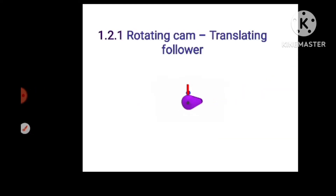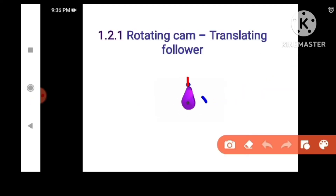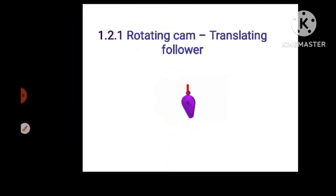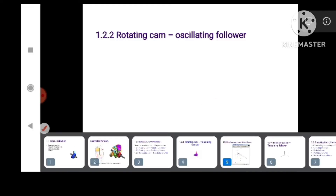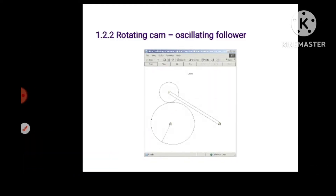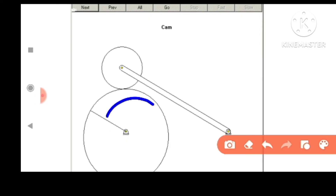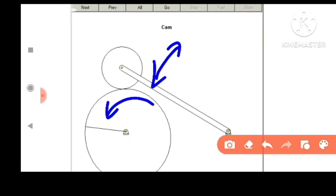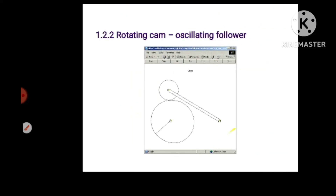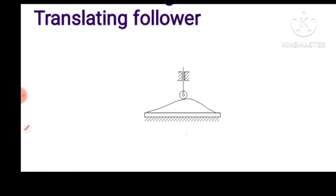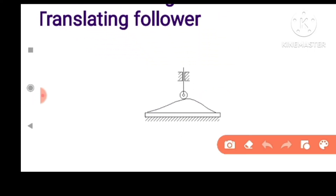Let's look at the cam types. First, rotating cam with translating follower. This is rotating cam with translating follower. This is the wedge shape — if the movement is the front and back move, if the follower moves front and back, this is the wedge cam.